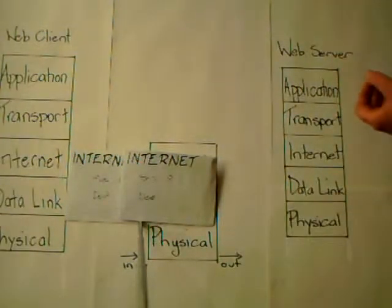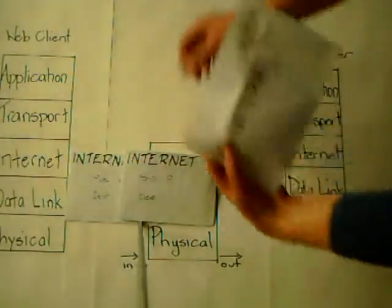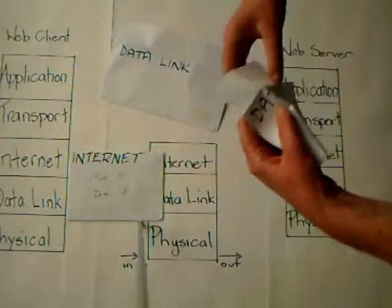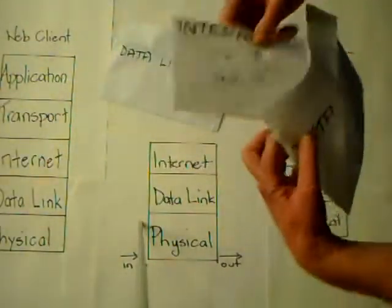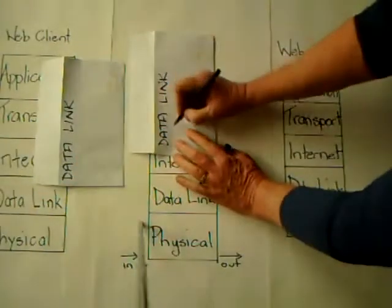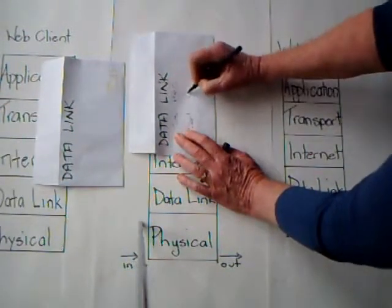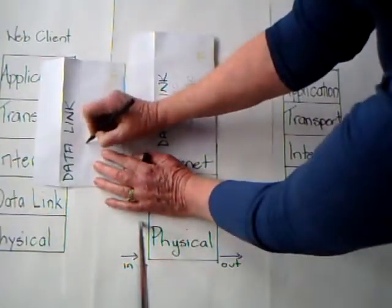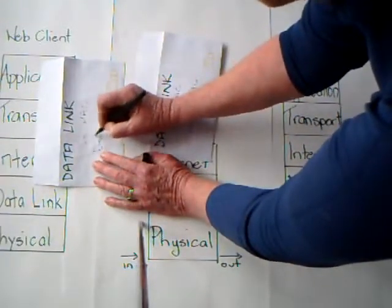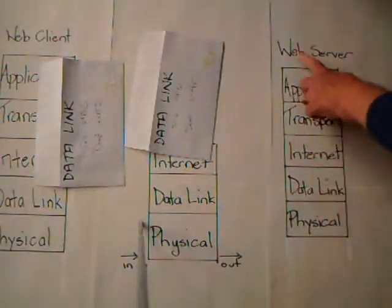At the data link layer, we create frames — there's further encapsulation to be done. Each of the packets is put inside a frame; the data link layer PDU is called a frame. We then put on the source MAC address and the destination MAC address. The source MAC address comes from the web client's MAC address, which it knows.